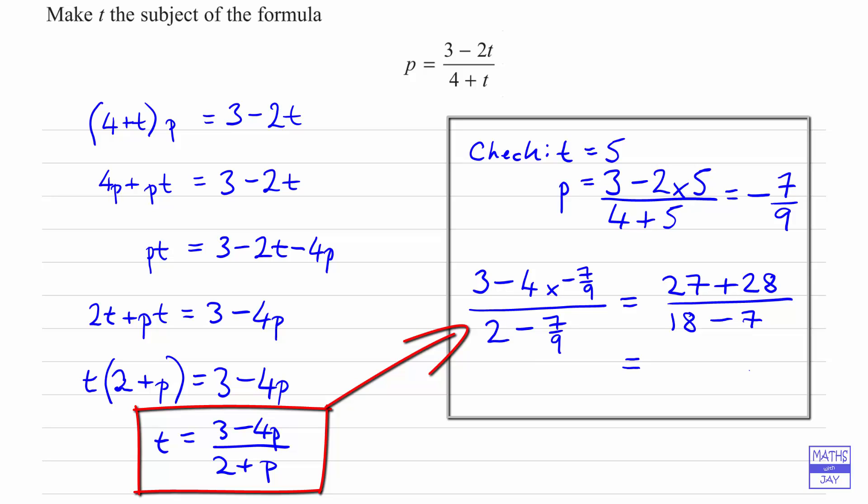So that gives us 27 plus 28 is 55, 18 minus 7 is 11, and 55 divided by 11 is 5.